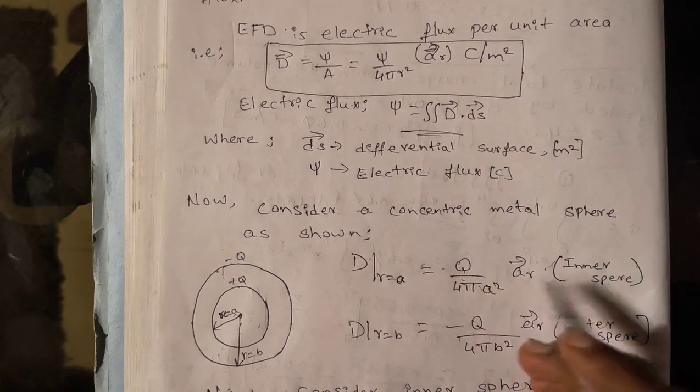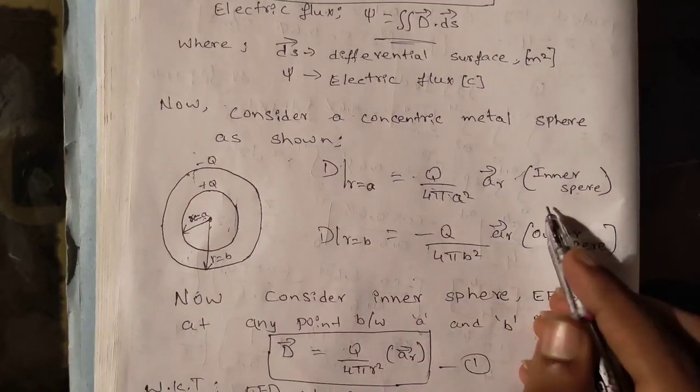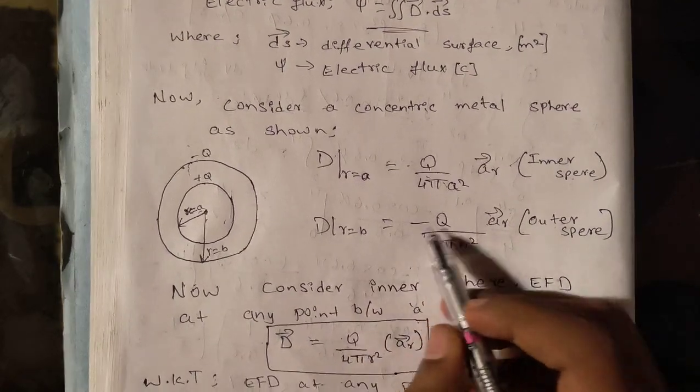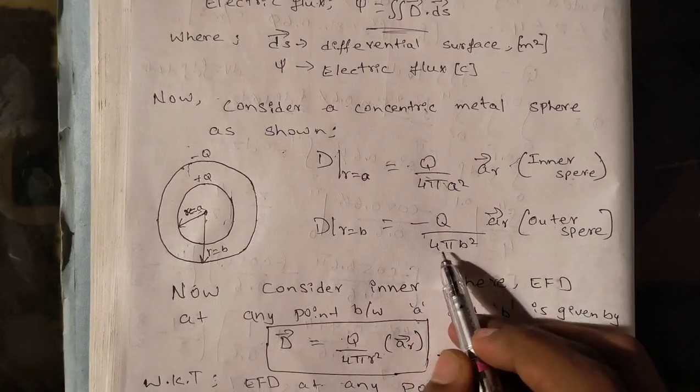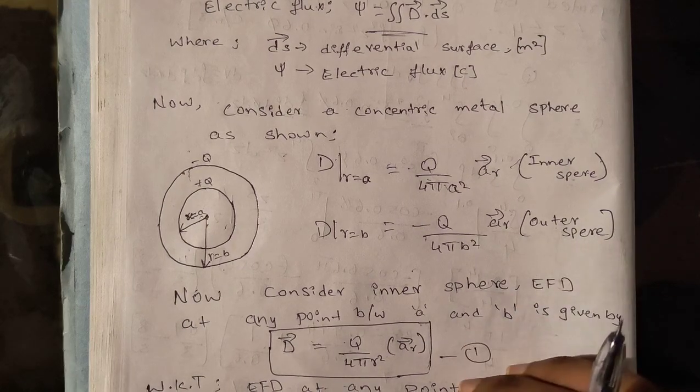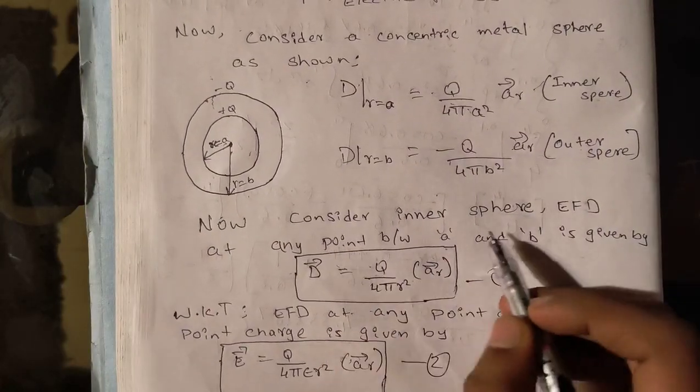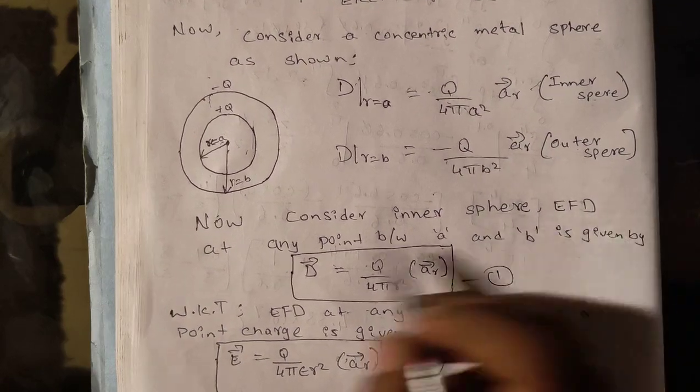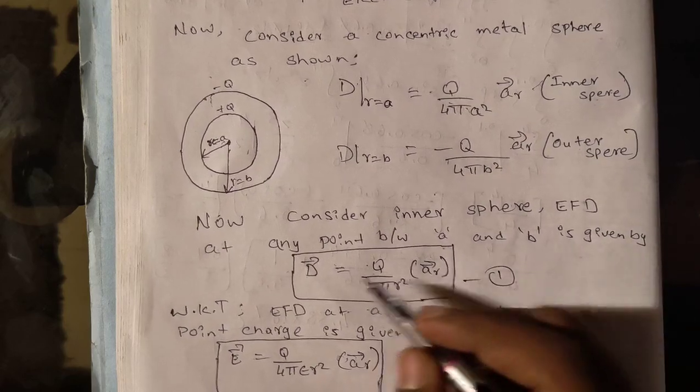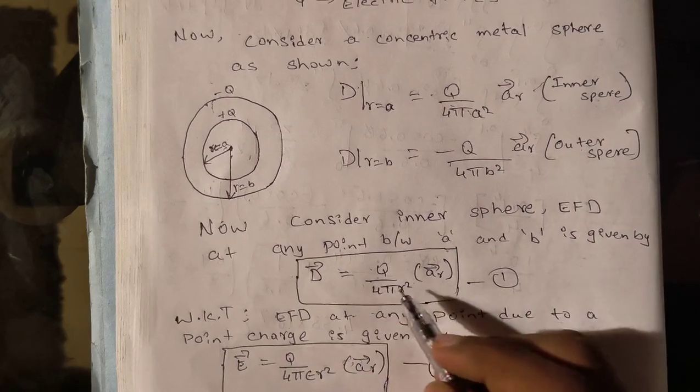Here, flux density for r = a, that is inner sphere, is Q divided by 4πa² aᵣ vector. This is derived from here, where I can replace Ψ by Q from Gauss's law. This is for inner sphere. For outer sphere, minus Q divided by 4πb² aᵣ vector.